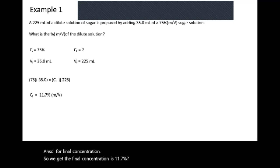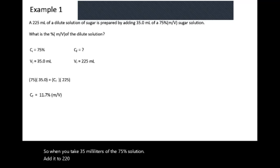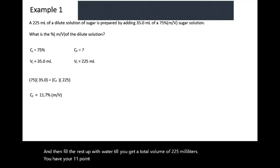So when you take 35 milliliters of the 75% solution and add it to a 225-milliliter volumetric flask, then fill the rest up with water to get a total volume of 225 milliliters, you'll have your 11.7% solution.